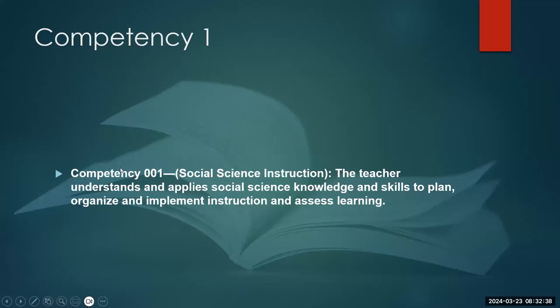So what is competency one all about? Competency one is the social science instruction. This means that as a teacher, you have to be able to understand and apply social science knowledge and skills to plan, organize, implement instruction, and assess learning.